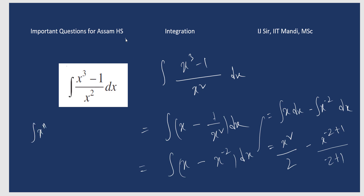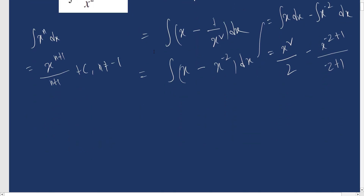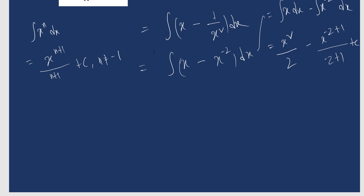The formula: integration of x to the power n dx = x to the power (n+1) divided by (n+1) plus c, where n is not equal to minus 1. Since minus 1 plus 1 equals 0, we apply the formula except when n equals minus 1. So the final answer is x² by 2, then minus 2 plus 1 gives minus 1, and minus of minus becomes plus, so x to the power minus 1 plus c. Simplifying: x²/2 + 1/x + c.